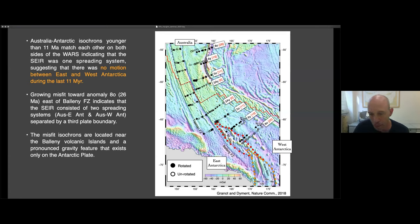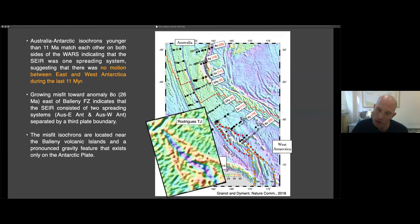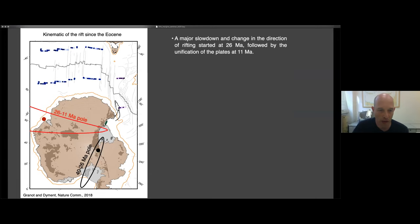There are these reworked features. The Balleny volcanic islands here. And this mesh sort of gravity signature up here, which seems to look quite similar to what we see in the Rodriguez triple junction in the Indian Ocean, where the southwest Indian ridge has been propagated and created these triangle features, which looks quite similar to what we see here.